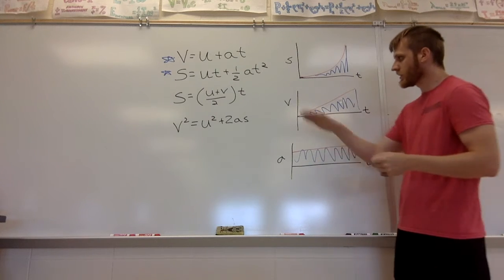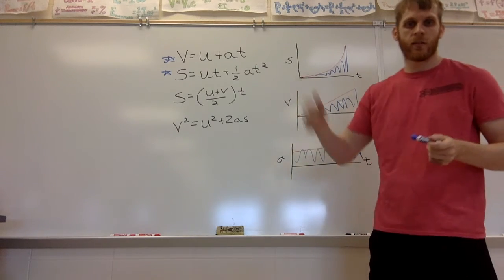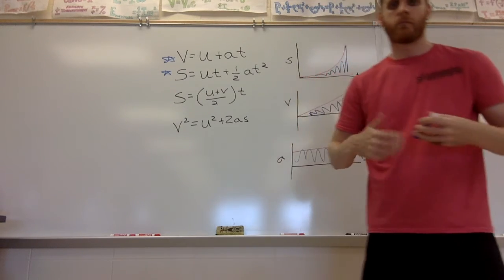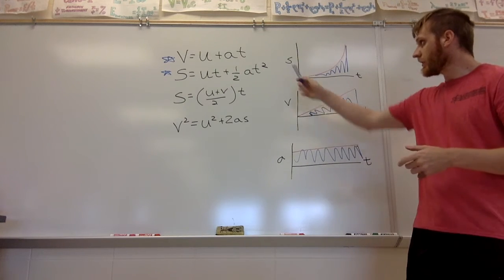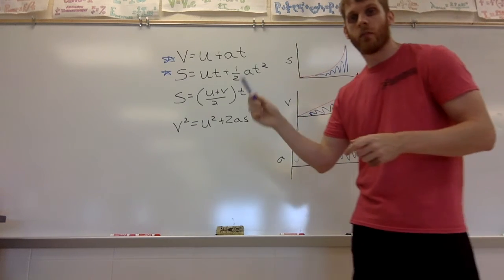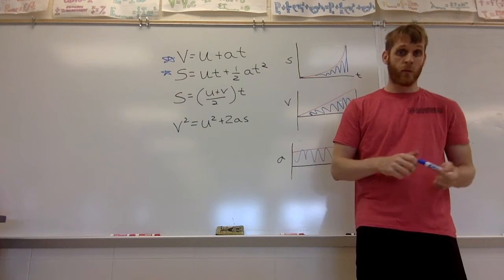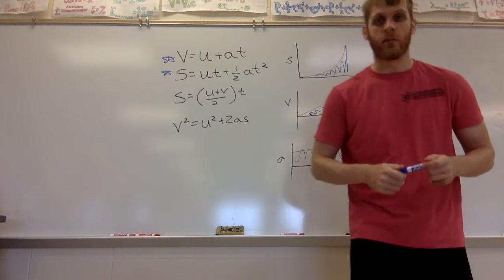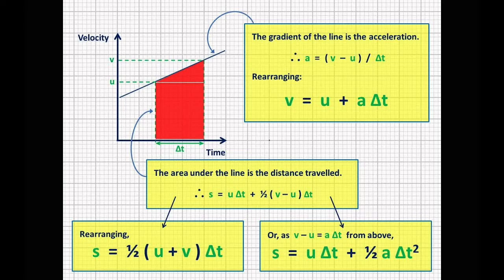So, area of acceleration is velocity, area of velocity is displacement. And the slope of displacement is velocity, and the slope of velocity is acceleration. So if you can remember those, as well as the SUVAT equations, here's an example.